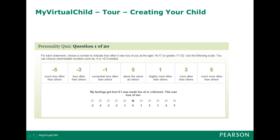Then it takes you through a personality quiz with a range from much less to much more than others for particular questions. For example, it might say: 'My feelings got hurt, I was made fun of or criticised — this was true of me.' And then you indicate how much or little that affected you. This reflects the student's experience at around age 16, 17, or 18, to give some inherited personality traits to the child, which will be thrown into the random system and affected by the choices the student makes.